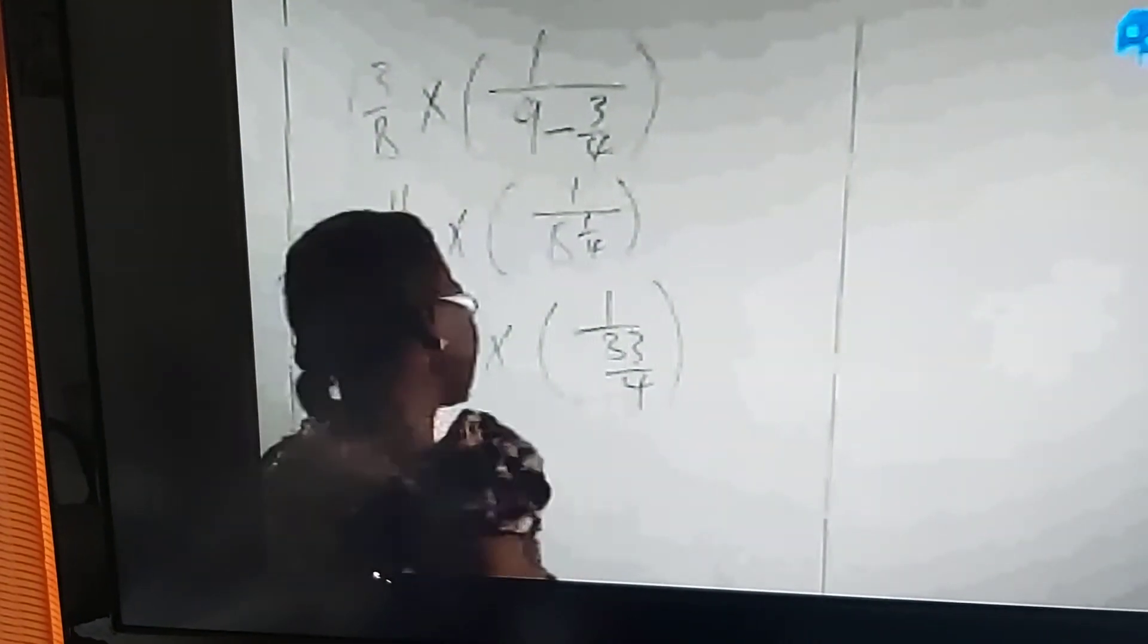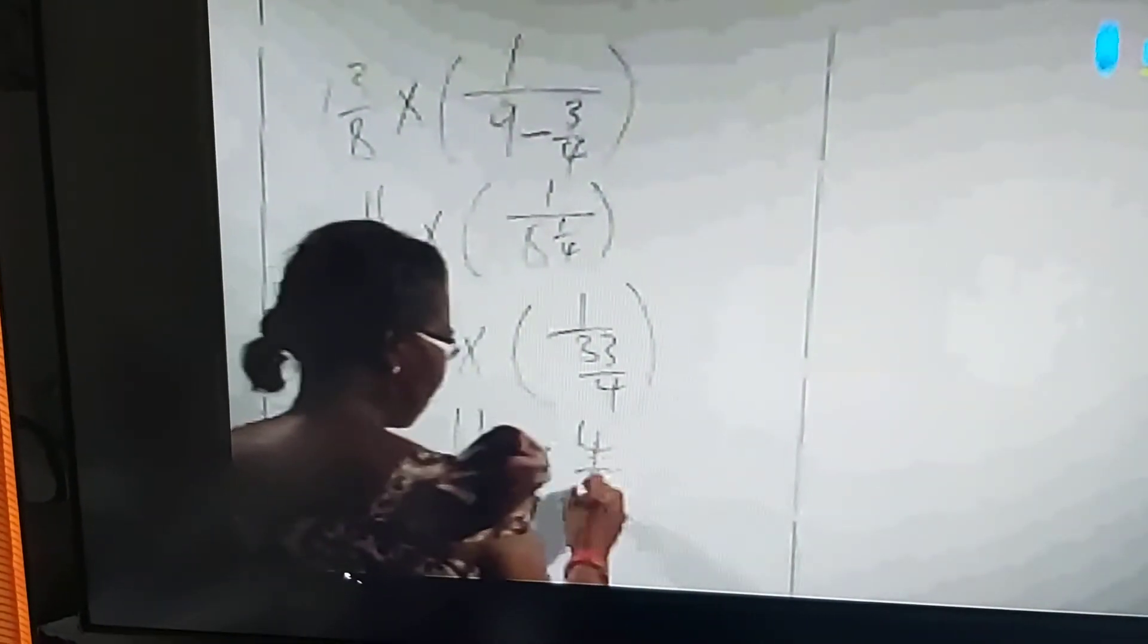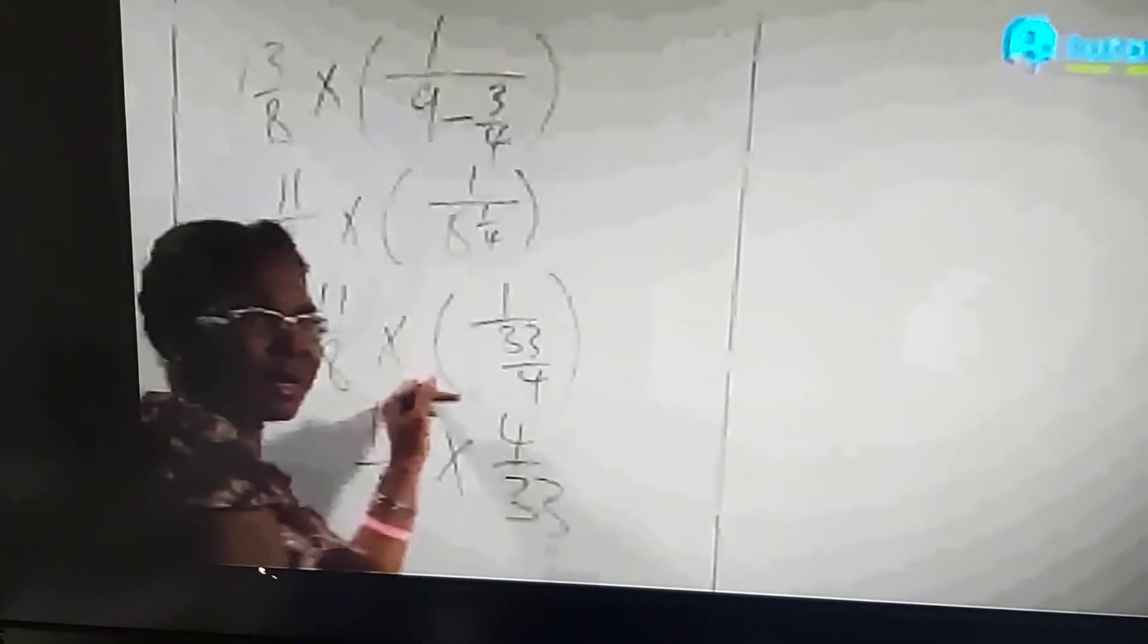Now we can simplify. 11 cancels with 33 to get 1 and 3.